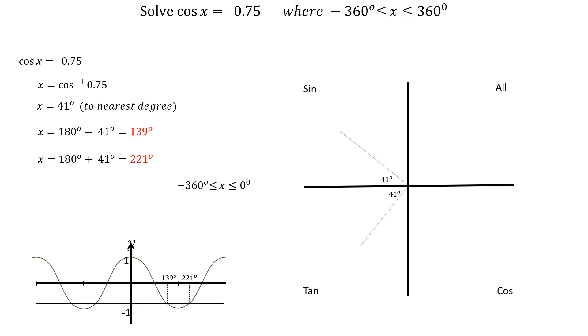Next, going in a clockwise direction from 0, we will find the solutions between 0 degrees and minus 360 degrees. The first angle is at minus 180 plus 41 degrees, which is minus 139 degrees. The last angle is at minus 180 degrees minus 41 degrees, which is minus 221 degrees.